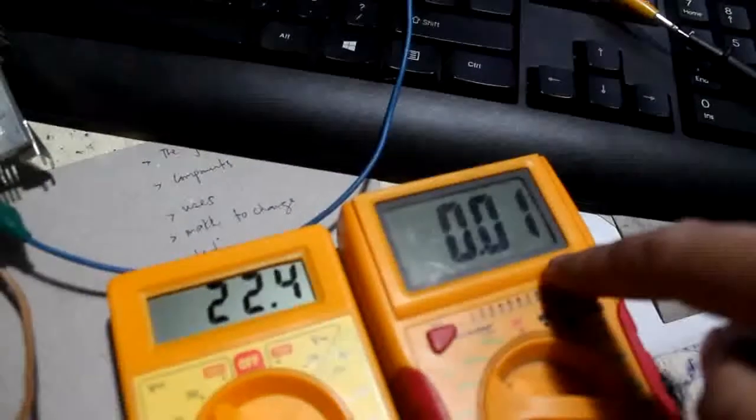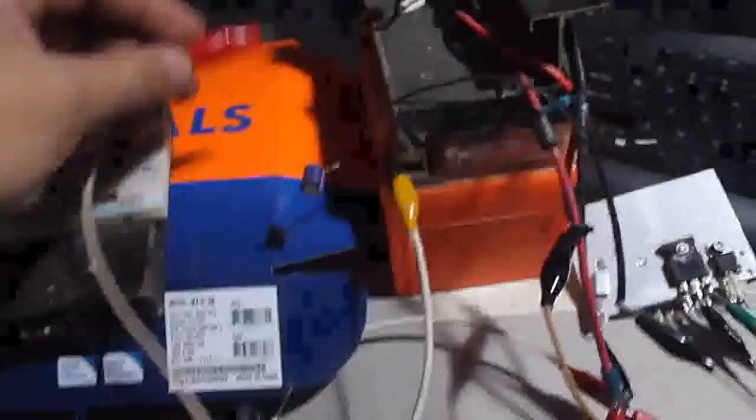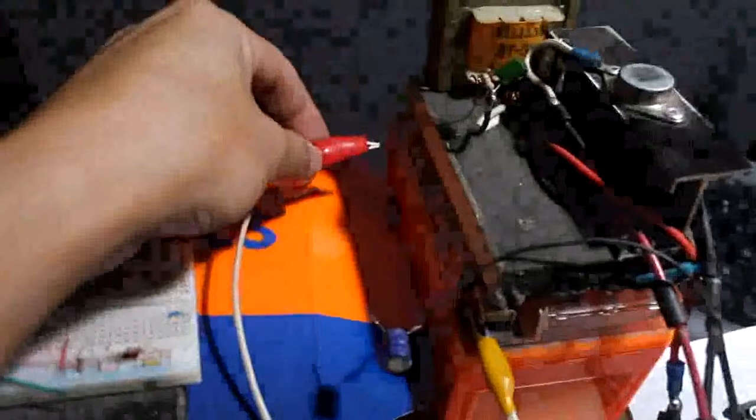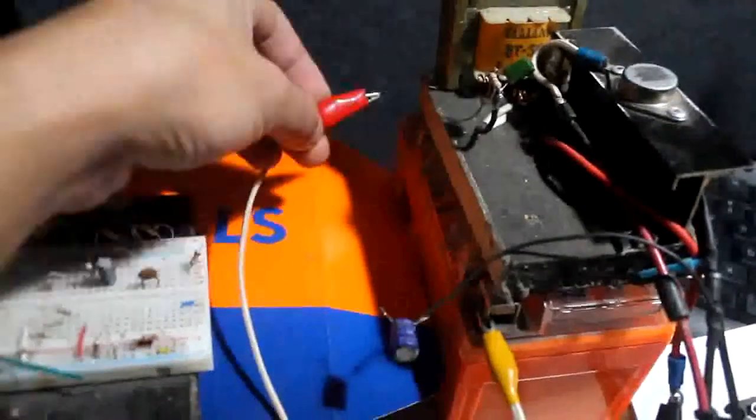Then this circuit now is working and it's just pulling 10 milliamps of power from the source bigger source battery because we're not yet connecting the output of this circuit to the battery down. So now we are going to connect this positive lead towards the positive terminal of the battery.